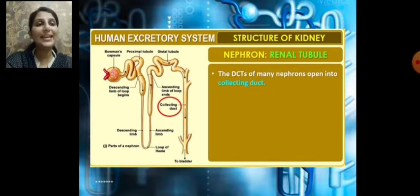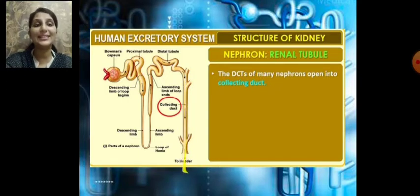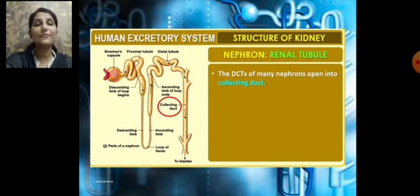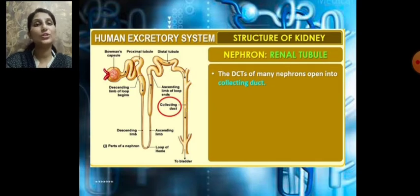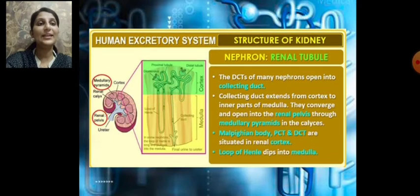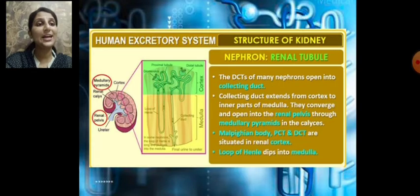The DCT of many nephrons opens into a tubular structure called the collecting duct. We can see the openings where DCTs from multiple nephrons join together. The collecting duct extends from the cortex to the inner part of the medulla.